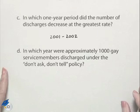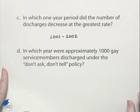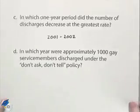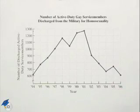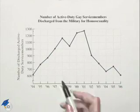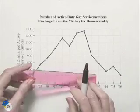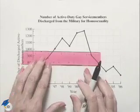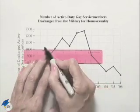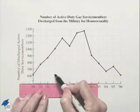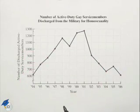In which year were approximately 1,000 gay service members discharged under the Don't Ask, Don't Tell policy? We go over to the value of 1,000 on the vertical axis and see which year that corresponds to. We notice that that's going to occur right here in the year 1997, and so that will be the answer to this question.